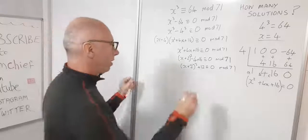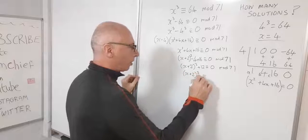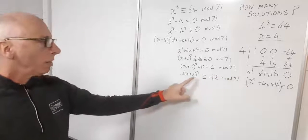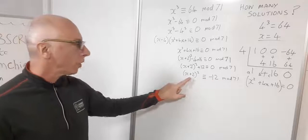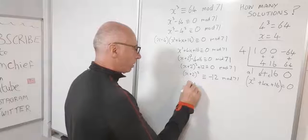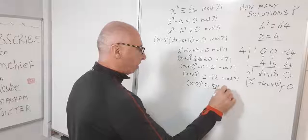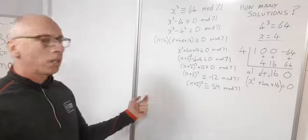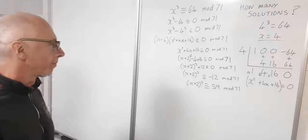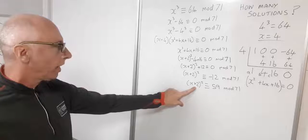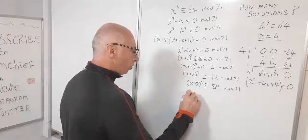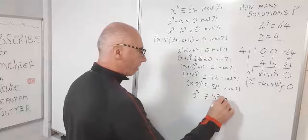Negative 4 plus 16 is positive 12, so we get x plus 2 squared plus 12 is congruent with 0 mod 71. Subtracting 12 from both sides gives x plus 2 squared congruent with negative 12 mod 71. Since we want a positive number congruent to negative 12 mod 71, that's 59. So x plus 2 squared is congruent with 59 mod 71. Substituting y for x plus 2, we get y squared congruent with 59 mod 71.